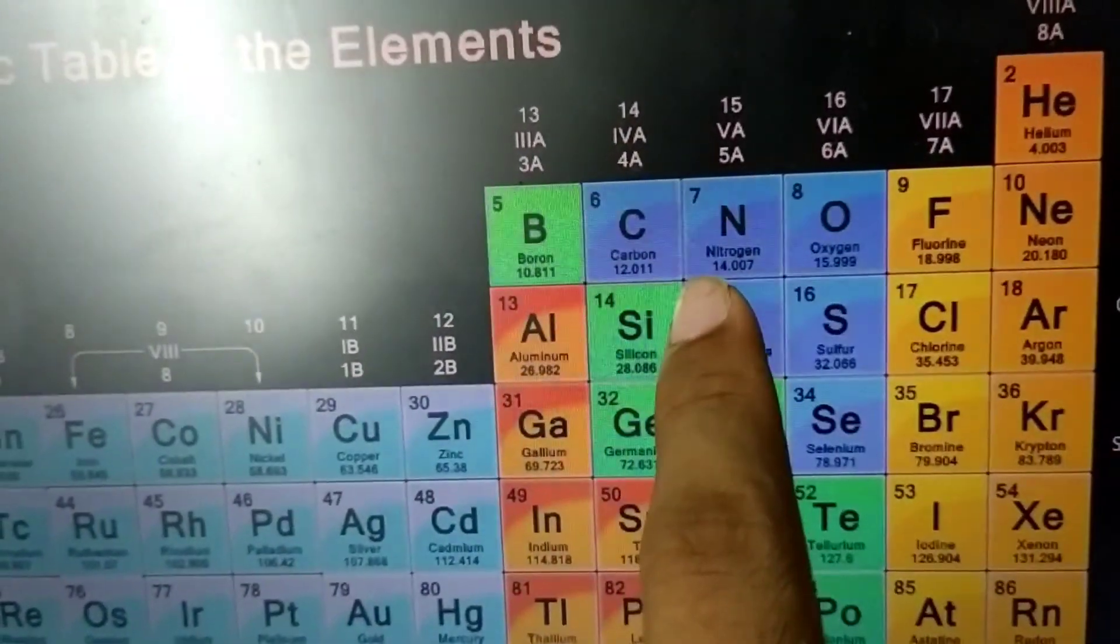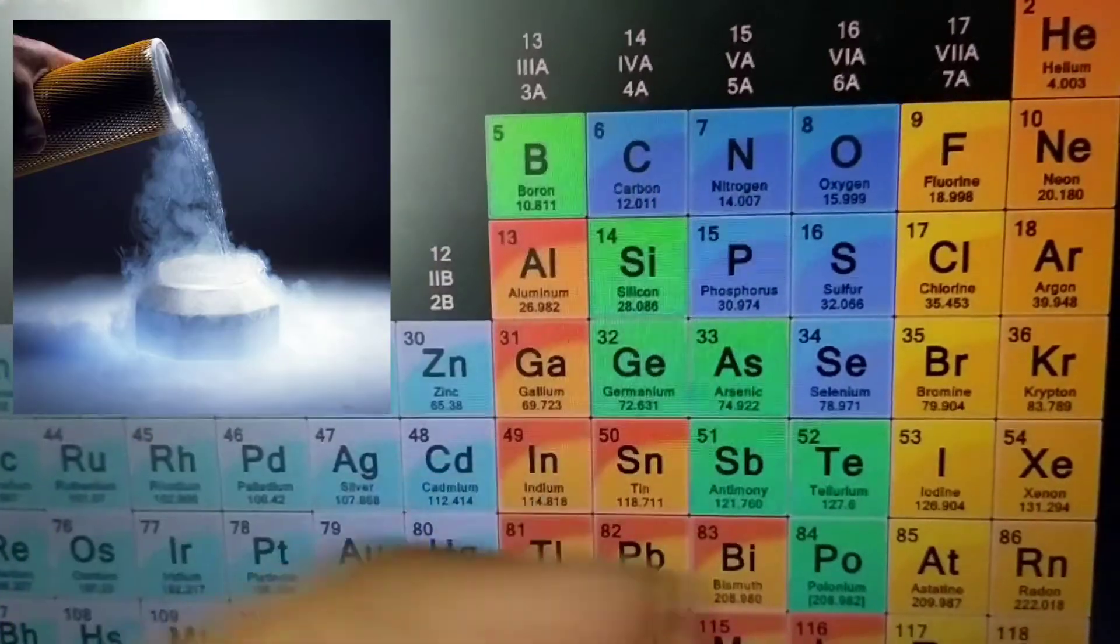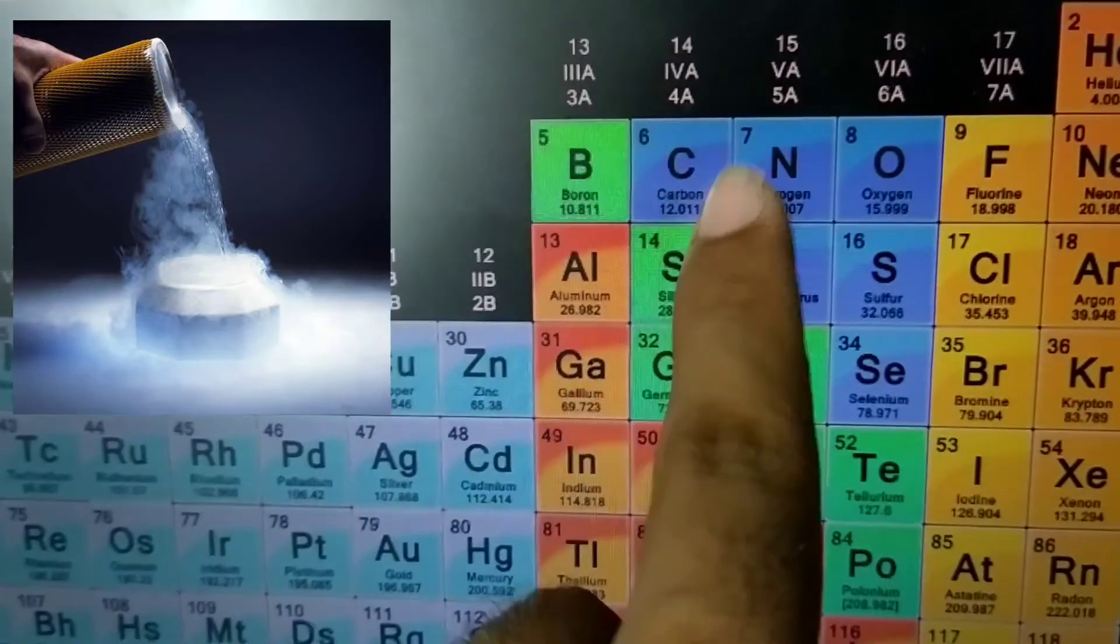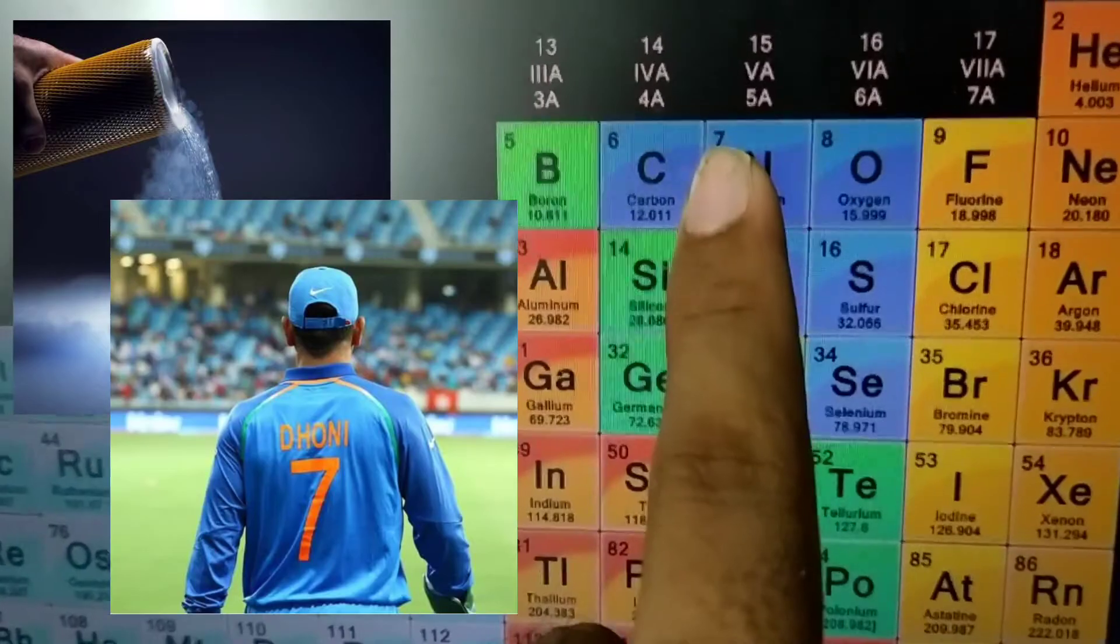Oxygen is very important. Nitrogen is also very important. Liquid nitrogen is extremely useful. And what is nitrogen's atomic number? 7. Captain Cool, MS Dhoni, his jersey number is also 7.